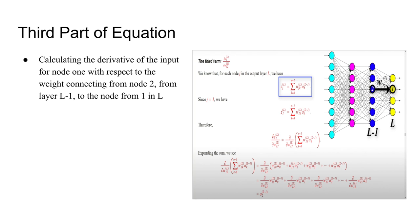Moving on to the third and last part of the equation, you're trying to find the derivative of the input for node 1 with respect to the weights connecting from node 2 in layer L−1 to node 1 in layer L. We know that for each node j in the output, the input is equal to the first step shown in the picture. Since we're working with node 1, we substitute 1 for j. When equating the third term, we get the third step in the picture. Finally, when we expand and simplify the equation, we get a sub 2 of layer L−1.